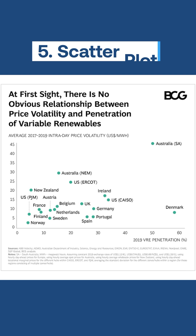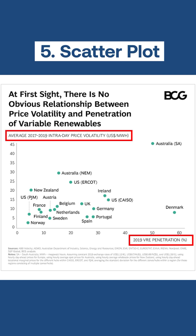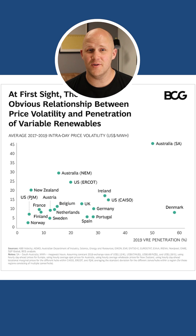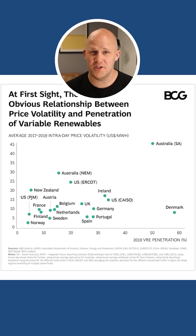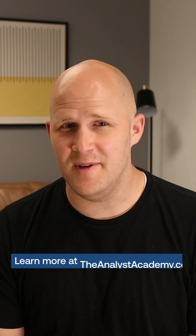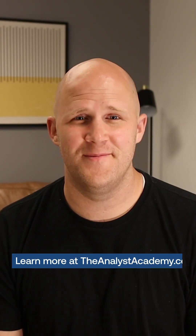Scatter plots are good for showing the relationship between two variables, such as height and weight. You can also add additional variables by changing the size, color, or shape of the dots. But don't get carried away with this because it can confuse your audience. Master these five chart types and you'll be able to visualize data like a pro.